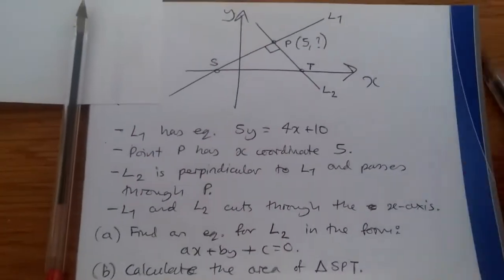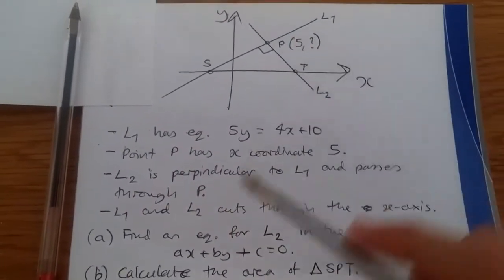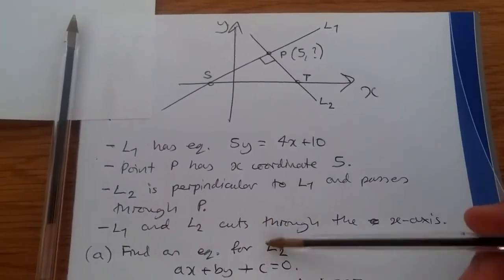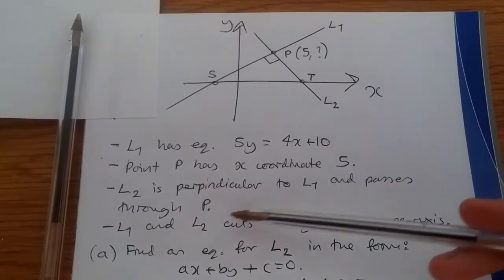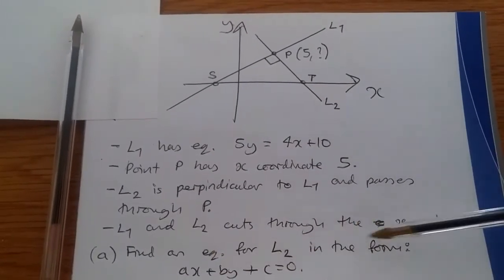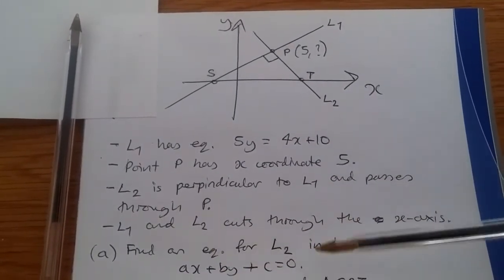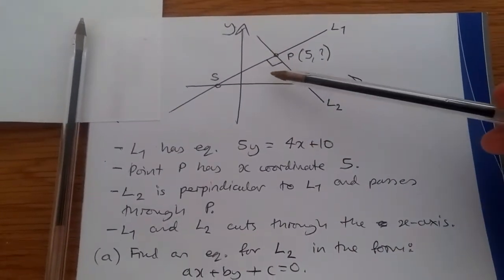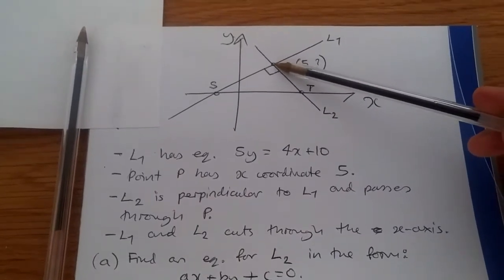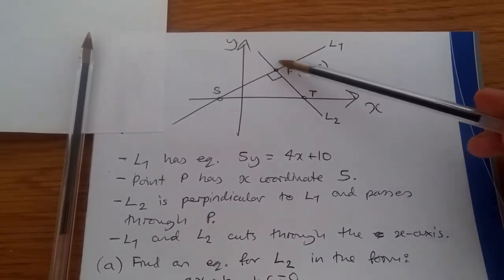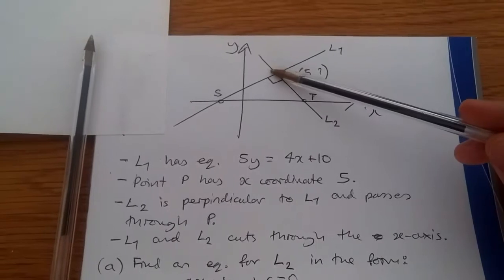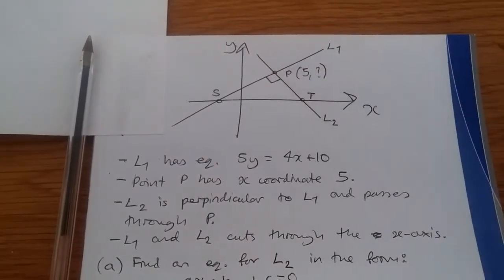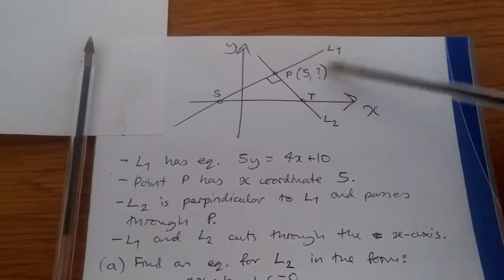We can just plug this into either the L1 or L2 equation to find y. L2 is perpendicular to L1 and passes through point P. L1 and L2 cut through the x-axis. The basic question is find an equation for L2 in the form Ax + By + C. Using the straight line equation y = Mx + C, if we know the gradient of L1 we can find the perpendicular gradient for L2 and plug in the x and y coordinates. First things first, let's find the coordinate y.